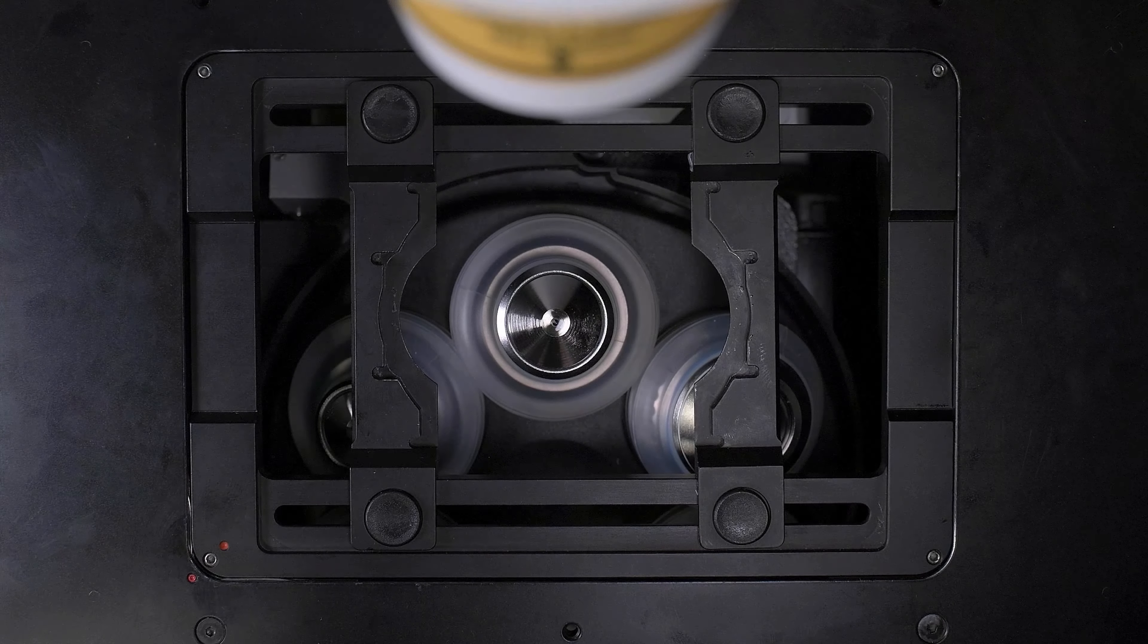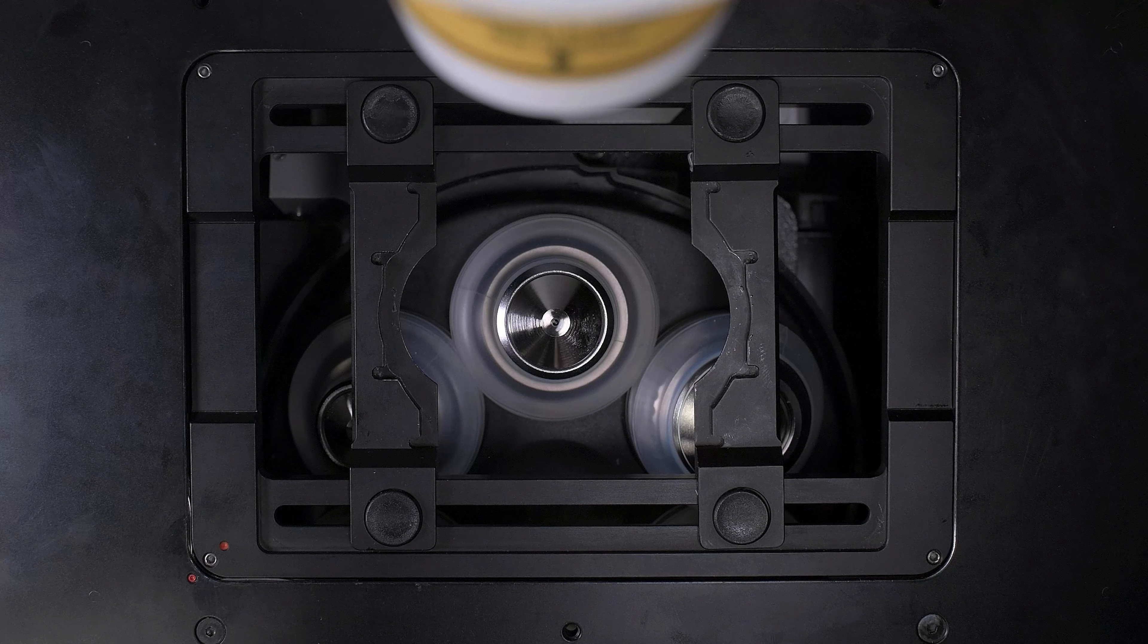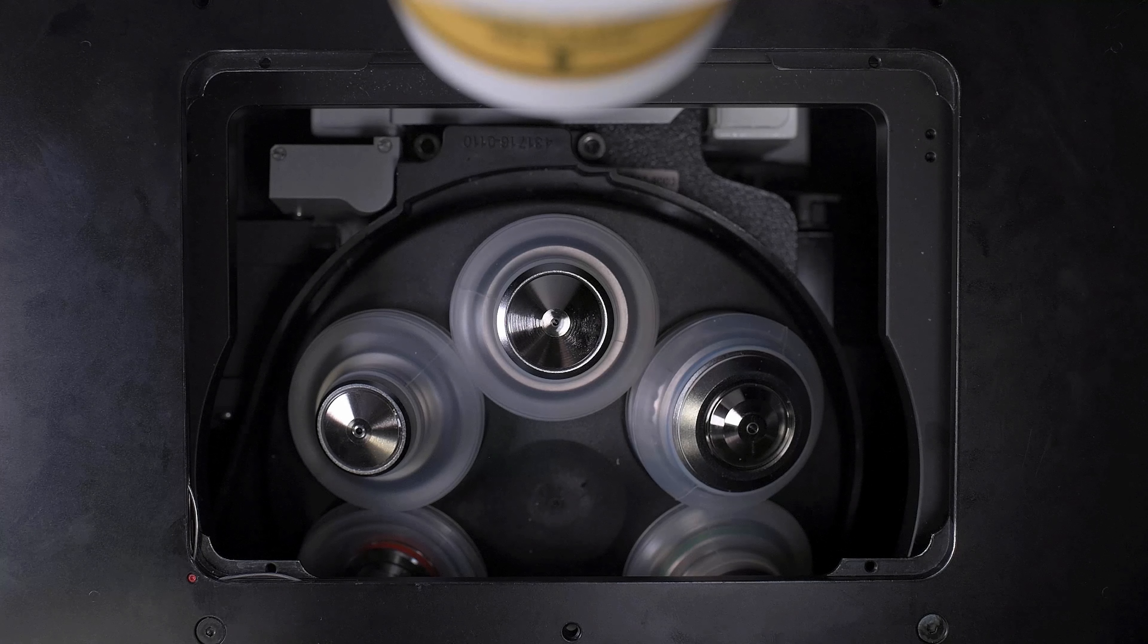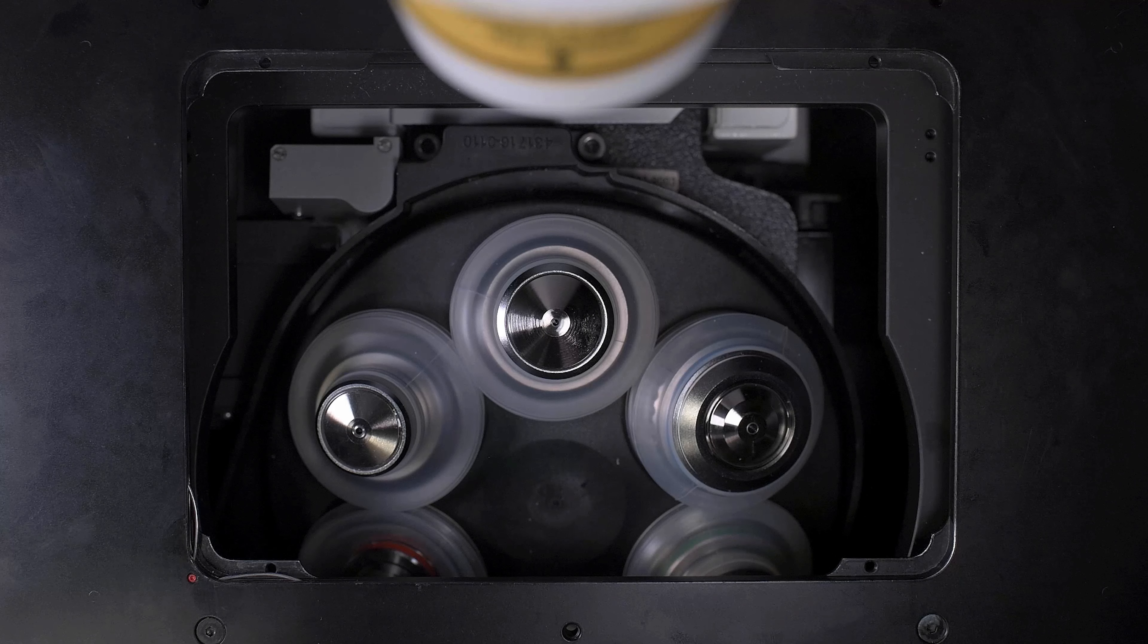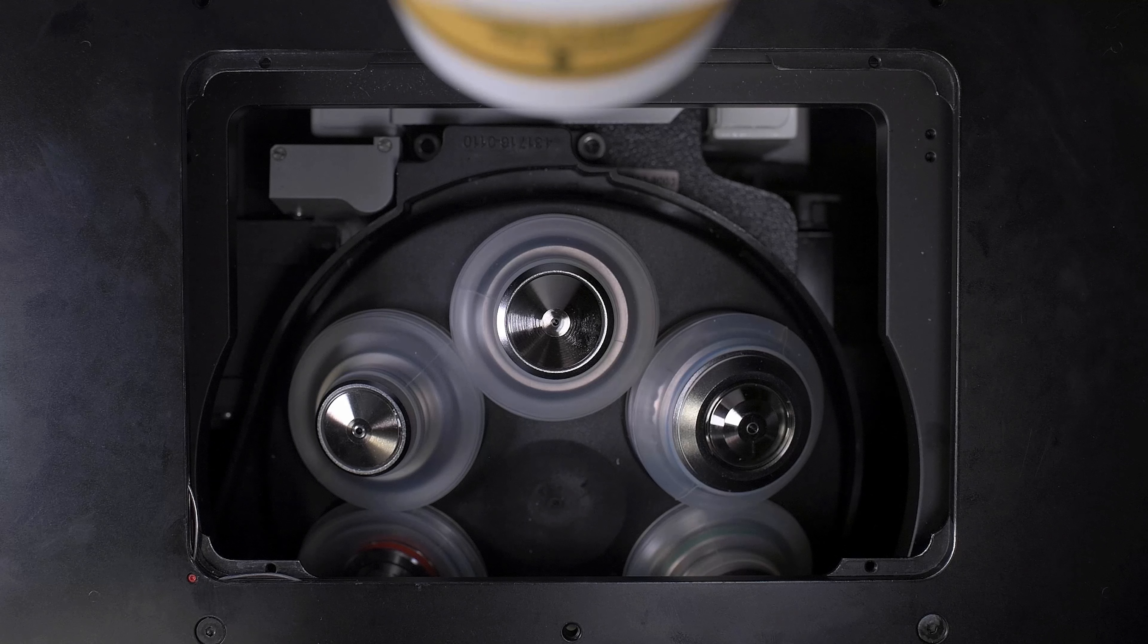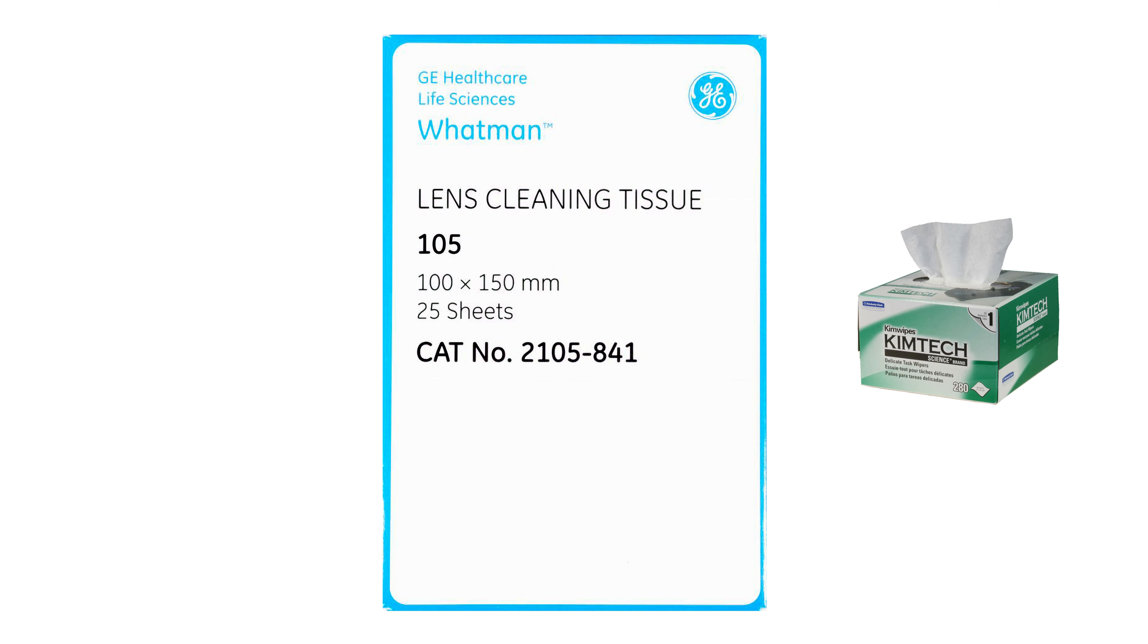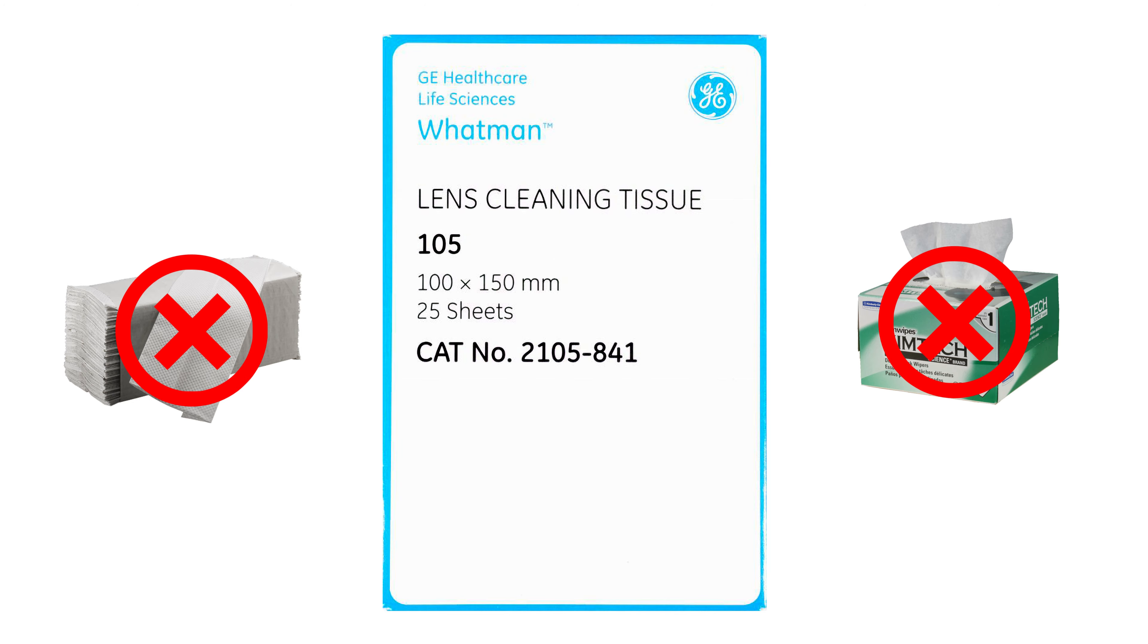When your imaging session is done, we'll need to ensure that we remove any residual oil from the objective. We don't want you to clean the lenses. Core staff will do that for you. However, we do expect you to wipe up any excess immersion fluid that remains on the objective. To wipe up excess immersion fluid, tear off a piece of Wattman lens paper. Do not attempt to use kim wipes, paper towels, or anything other than the provided Wattman lens tissue to clean excess oil.